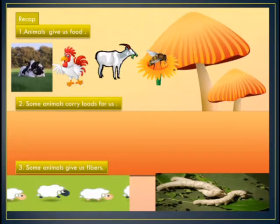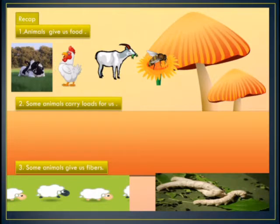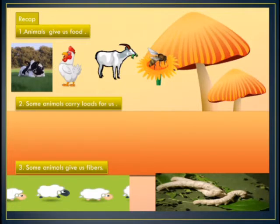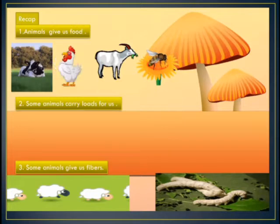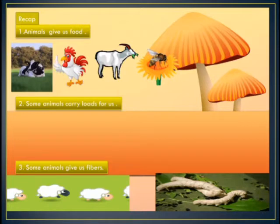Dear students, as you know we are on the unit Useful Animals. In the previous video, we learnt about some animals. We learnt that some animals give us food, like a cow that gives us milk, and we make dairy foods from milk. Milk is considered a complete food and it is good for health. Geese and ducks give us eggs, we get meat from animals like goat, fish, and chicken, and we get honey from honeybees.